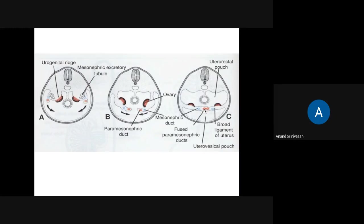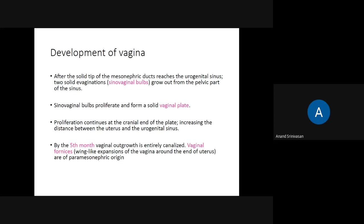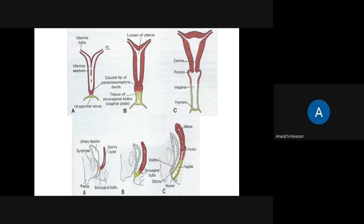This shows the two fused paramesonephric ducts and the mesonephric duct. Now let's see the development of the vaginal part. After the fusion of the two paramesonephric ducts, they open into the sinovaginal bulb. The paramesonephric ducts reach the urogenital sinus, and there will be two solid evaginations called the sinovaginal bulge, growing from the pelvic part of the urogenital sinus. The uterus is initially separated by a septum which finally disappears.